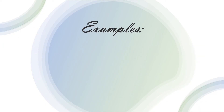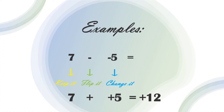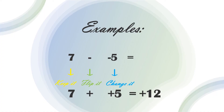Example: 7 minus negative 5 equals — keep the number 7, flip the subtraction sign to addition sign, change negative 5 to positive 5. 7 plus positive 5 equals positive 12.